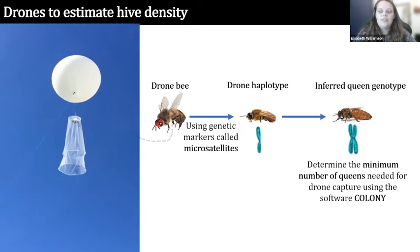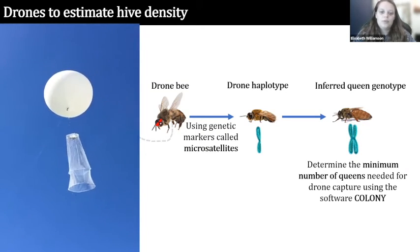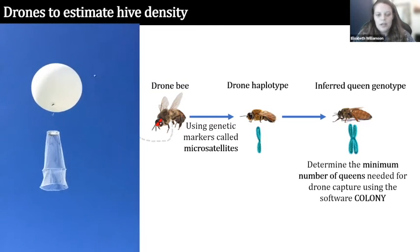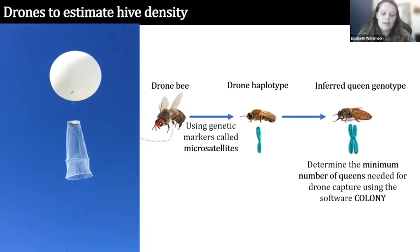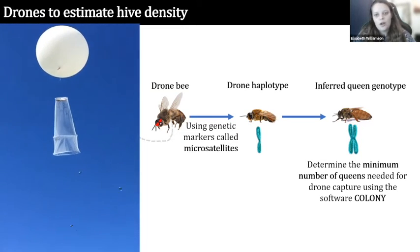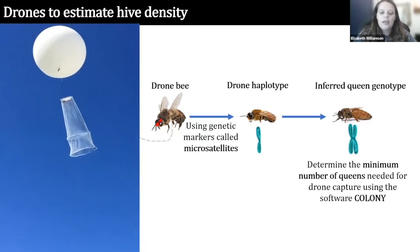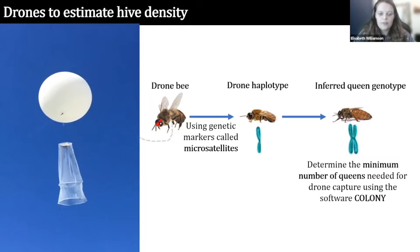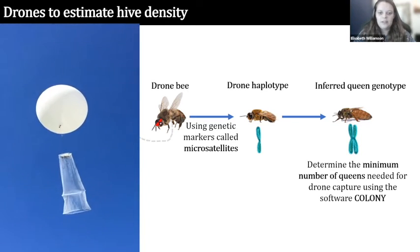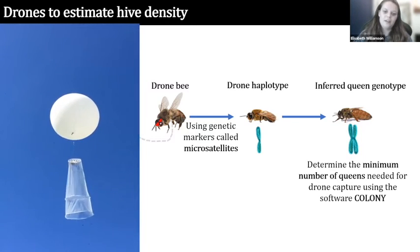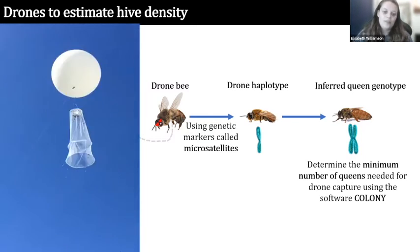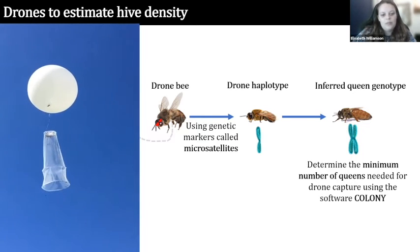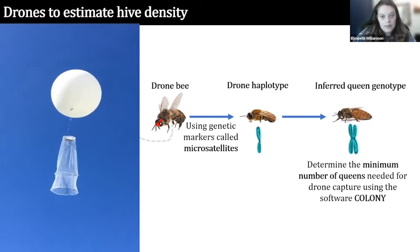Once we've collected drones, we obtain their microsatellites — genetic markers useful for determining relatedness. From drone haplotypes we can infer the number of brother groups, or sib ships, of drones caught in the trap. From sib ships we can also infer the mother queen genotype, and because one queen equates to one colony, we can infer the density estimate. This inference is done with the software COLONY, which deploys a maximum likelihood method.